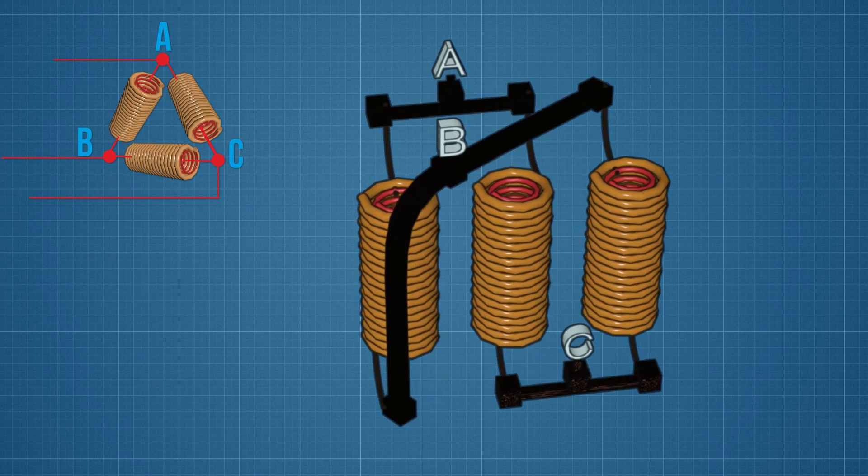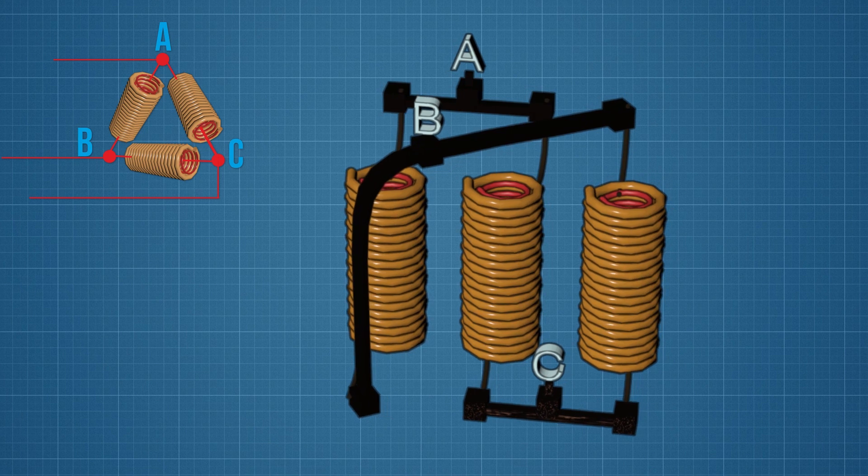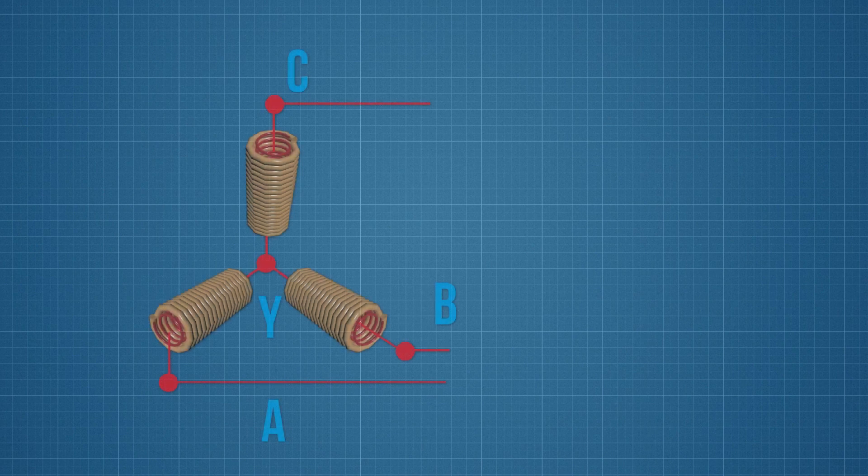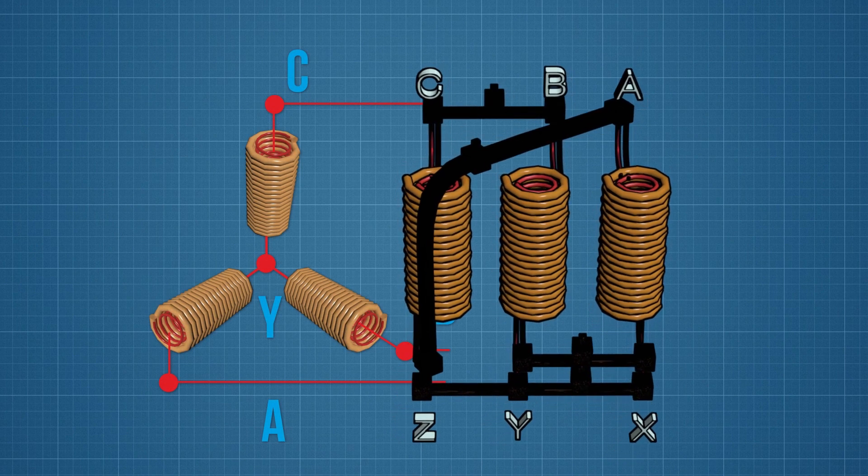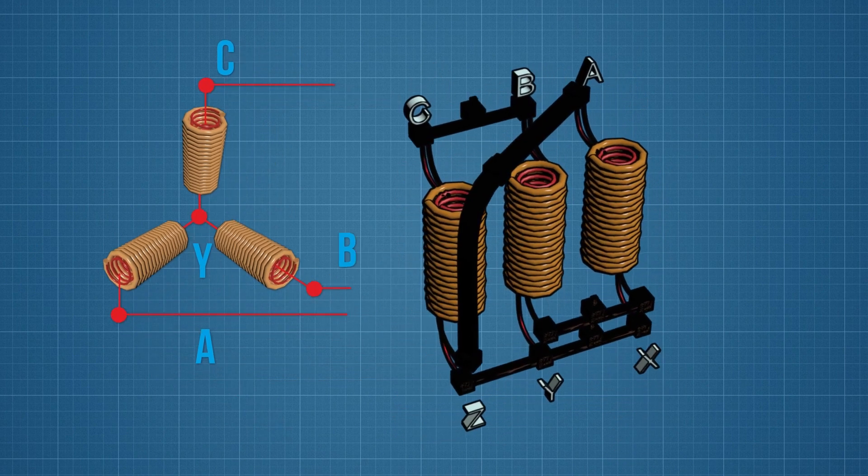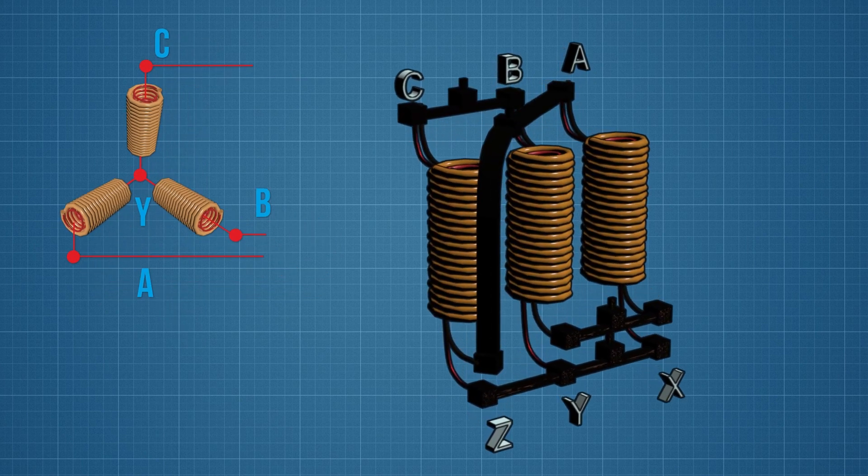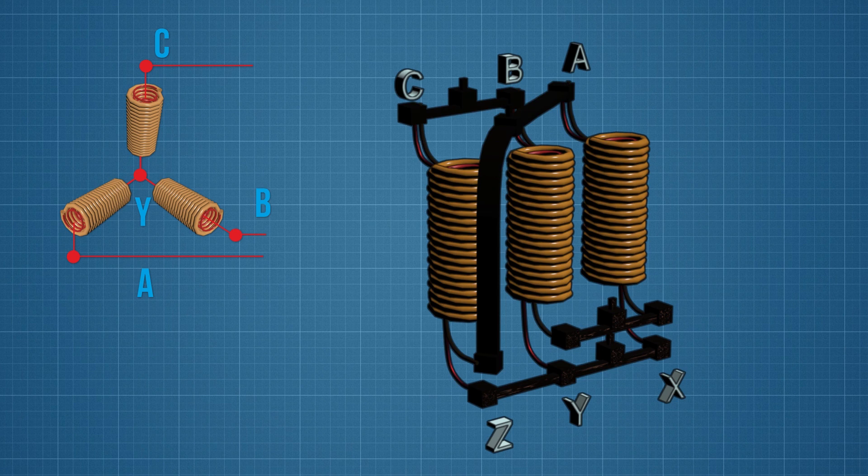A delta connection can be obtained if the end of phase A (point X) is connected with the start of phase C, and the end of phase C (point Z) is connected with the start of phase A. A Y connection of higher voltage windings with neutral is applied to high voltage transformers, and a delta connection is applied to lower voltage windings. This means four wires can be led from such a transformer: three power wires and one neutral wire.